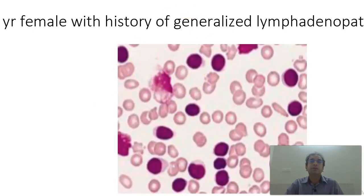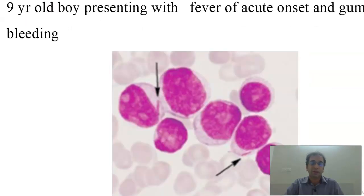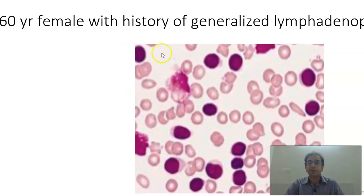Coming to a 60-year-old female with generalized lymphadenopathy. You find a lot of lymphocytes — on a casual look they appear normal, but they look a bit atypical. What you also find here are smudge cells. The history is very clear: 60-year-old female, elderly patient, with generalized lymphadenopathy and enlarged lymph nodes. All that points towards chronic lymphocytic leukemia.